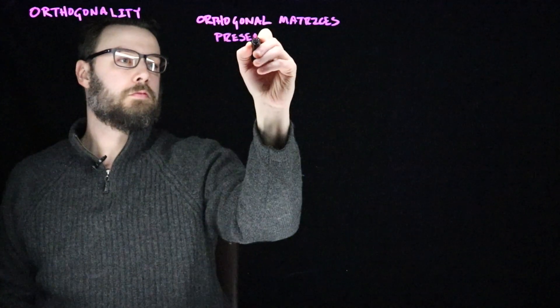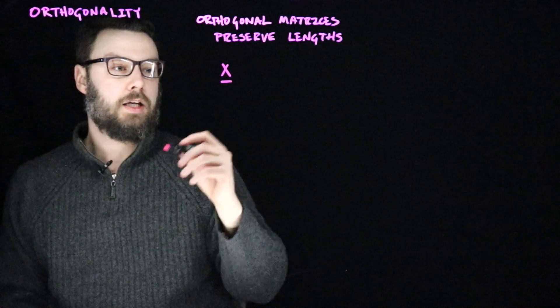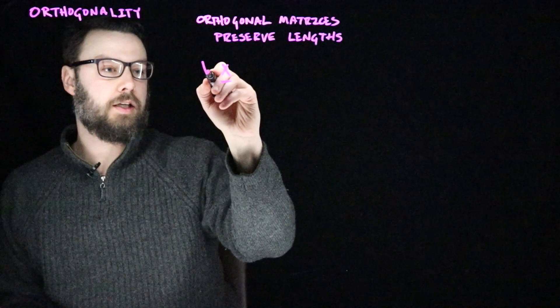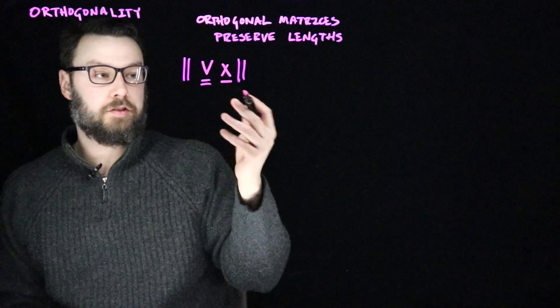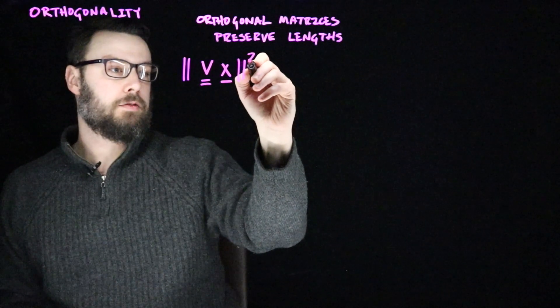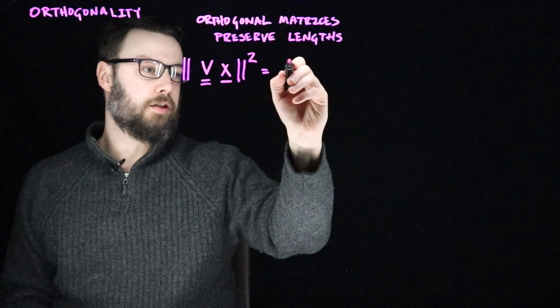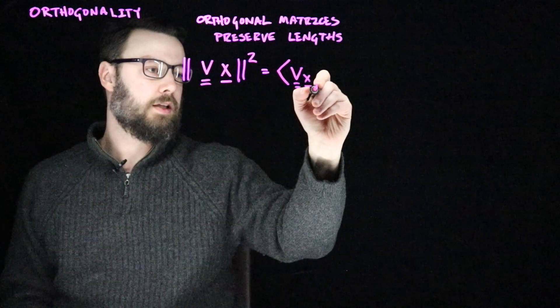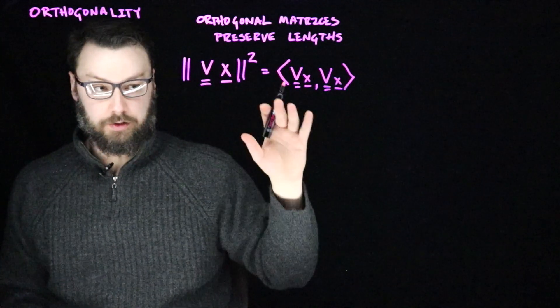One of the reasons we care a lot about orthogonal matrices is because they preserve lengths. If you hit a vector with an orthogonal matrix, it doesn't change the length of the vector. Let's imagine we care about some vector X with some length, and we hit it with an orthogonal matrix V and ask what's the length of VX. Since this is a positive number, let's square it — we can think of squared lengths in terms of inner products, so let's write this as the inner product of VX with VX.